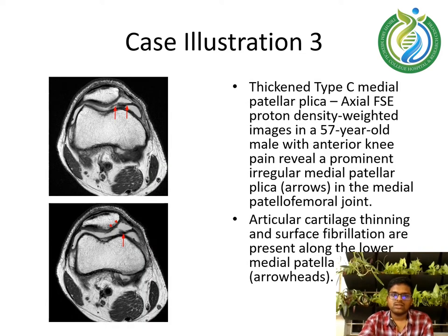Case illustration 3 shows a thickened type C medial patellar plicae. Axial FSE proton density weighted images in a 57-year-old male with anterior knee pain reveal a prominent irregular medial patellar plicae in the medial patellofemoral joint shown by the arrow. Articular cartilage thinning and surface fibrillation are present along the lower medial patella, shown by the arrowheads.